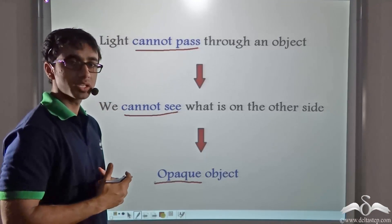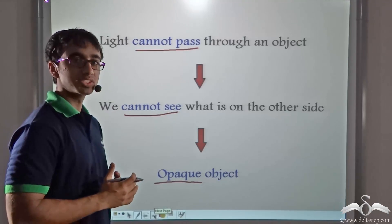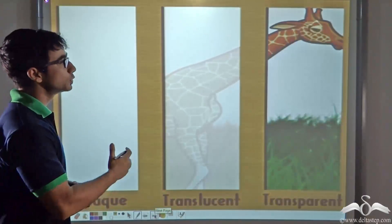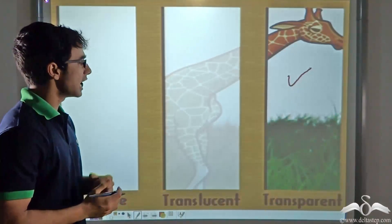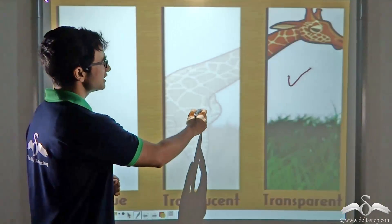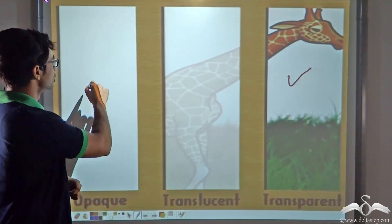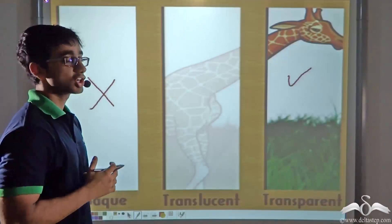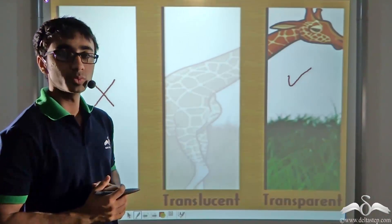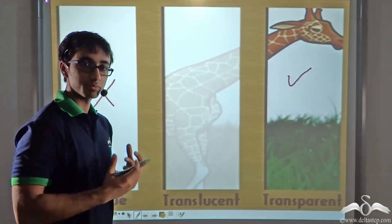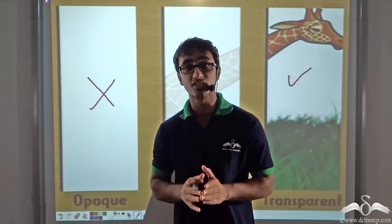So what are the three kinds of objects we learnt about? Opaque, transparent, and translucent. You will notice in this picture that you can see a giraffe very clearly through the transparent object. However, through the translucent object, the body of the giraffe is not very visible — it is somewhat visible and you can see only a hazy picture. But through the opaque object, you cannot see anything at all. Transparent objects are those through which light passes very easily. Translucent objects are those through which light passes only partially. And opaque objects are those through which light does not pass at all.